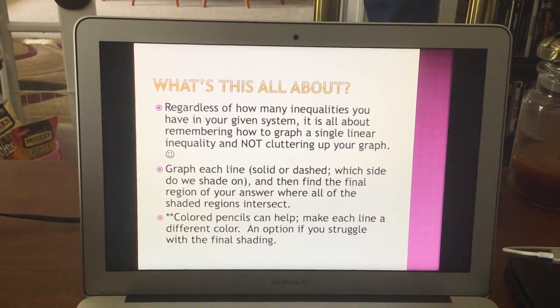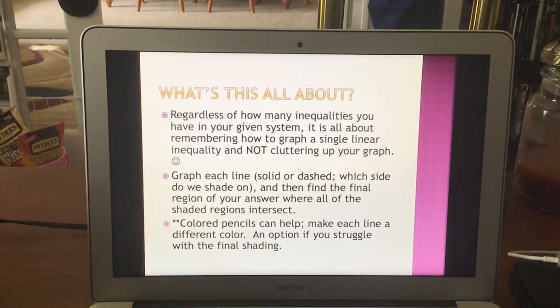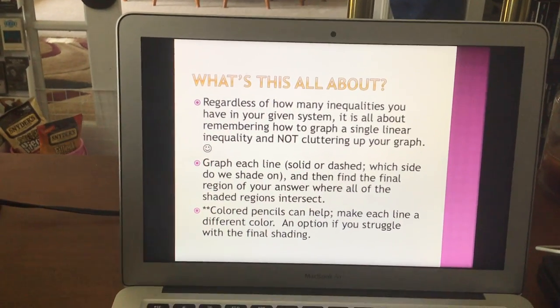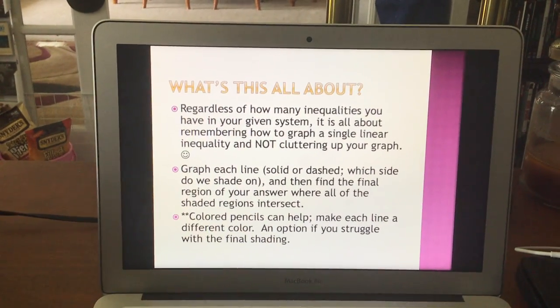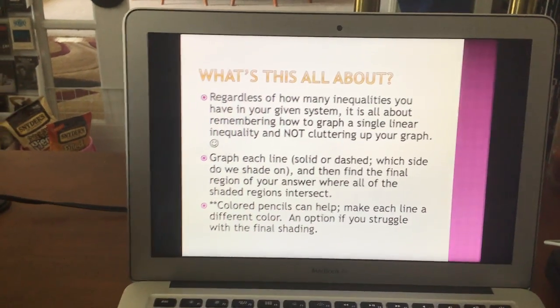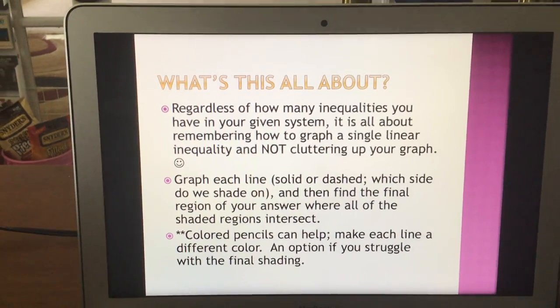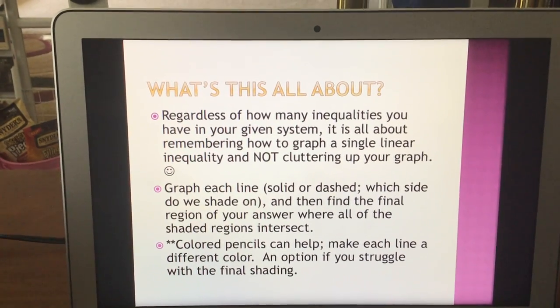A little piece of advice on the bottom here, colored pencils can be helpful. If you graph one of them in yellow and one of them in blue, then where they intersect makes green. So it kind of helps you keeping your graph from getting too cluttered up if you struggle with the final shading.